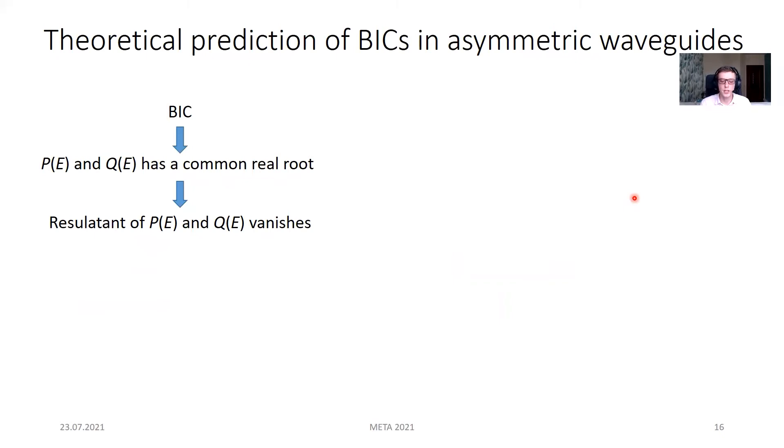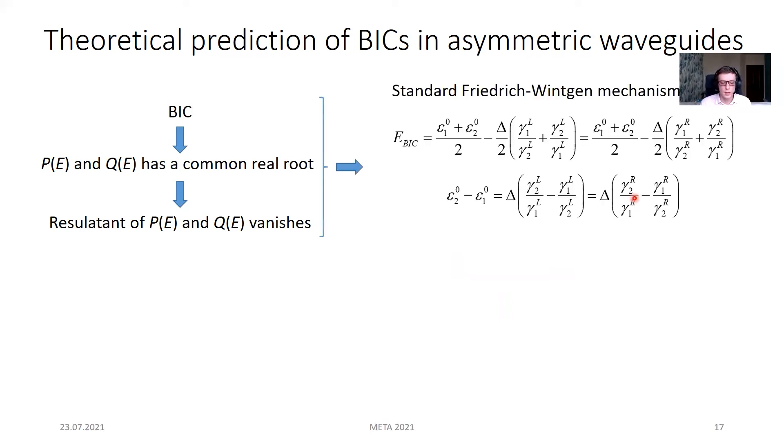As I have said before, BIC formation takes place when functions P and Q have a common real root. In the case of rational functions, we can conclude that this takes place when the resultant of their numerators vanishes. This requirement, first of all, leads to the standard Friedrich-Wintgen energy and the condition for the energy split between the states.